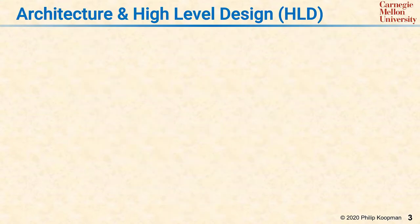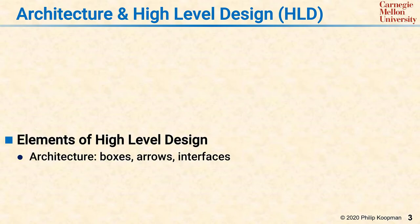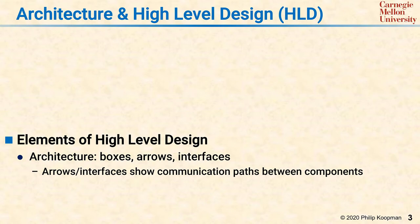The elements of a high-level design document typically include an architecture as well as a more detailed high-level design itself. The architecture is boxes, arrows, and sometimes interface descriptions. The arrows or interfaces show communication paths between components, with the components being the boxes.